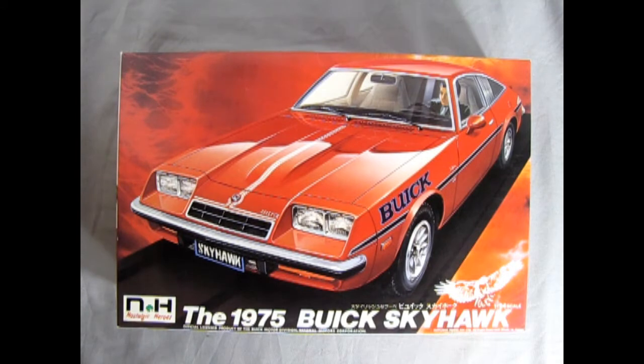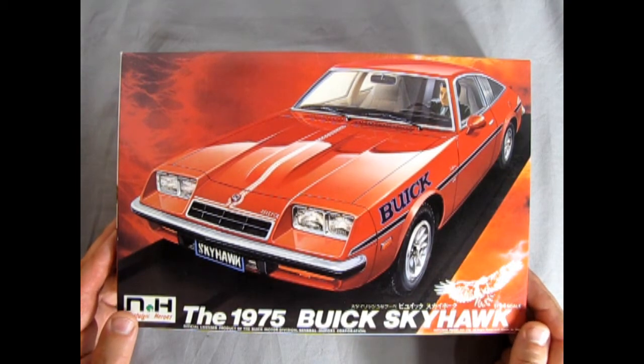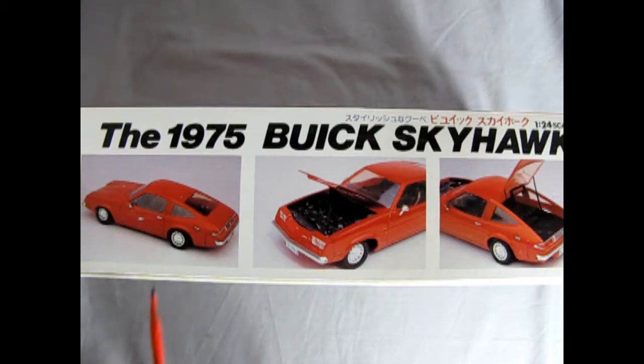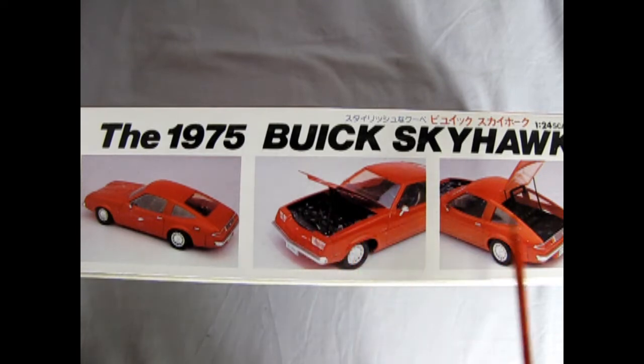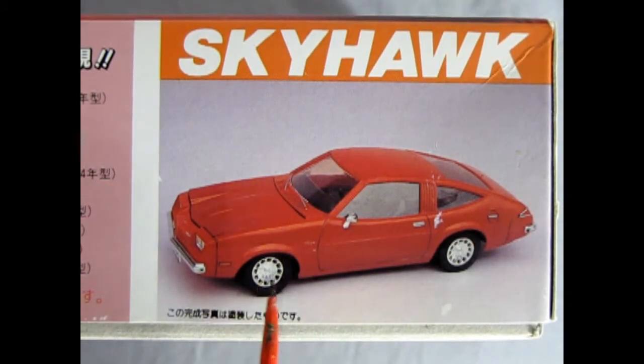This Nostalgic Heroes model kit by Doyusha is actually not really that bad. It includes an electric motor inside which powers the rear wheels. As we look on the side of the box we can see details of the model car, and you can build this with an opening hood and opening tailgate if you are quite ambitious. Here we have a three-quarter view of our Skyhawk. It should be quite a fun build.